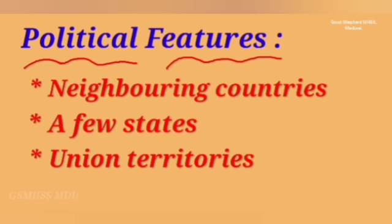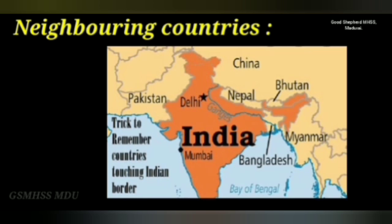You may include other features unique to India. The first political feature is neighboring countries. How many neighboring countries does India have? There are 7 neighboring countries: China, Nepal, Bhutan, Myanmar, Bangladesh, Pakistan, Sri Lanka, and island countries.